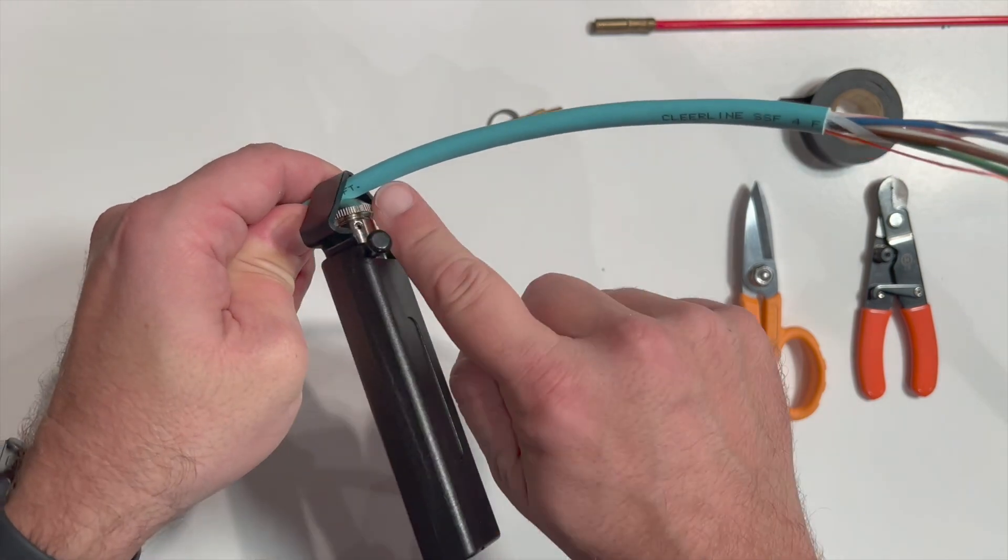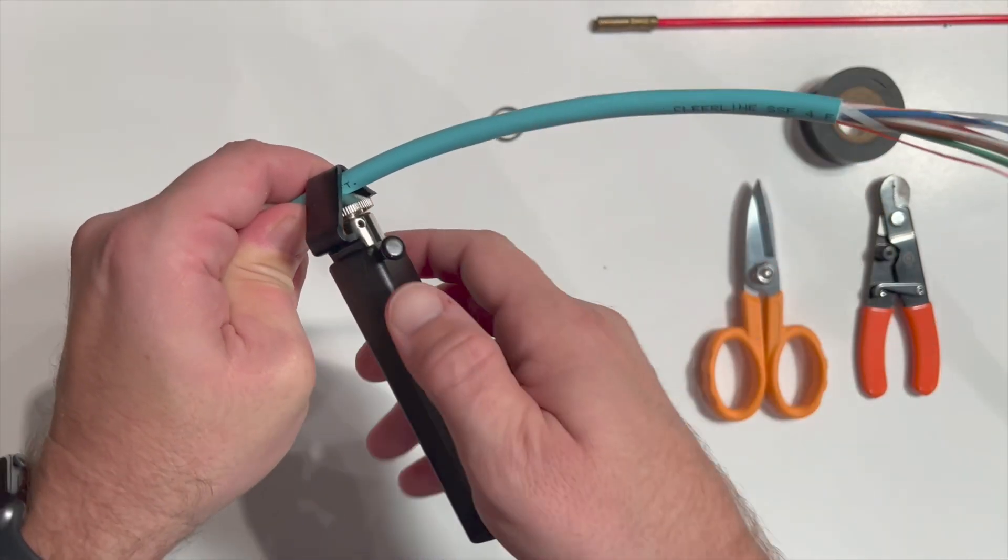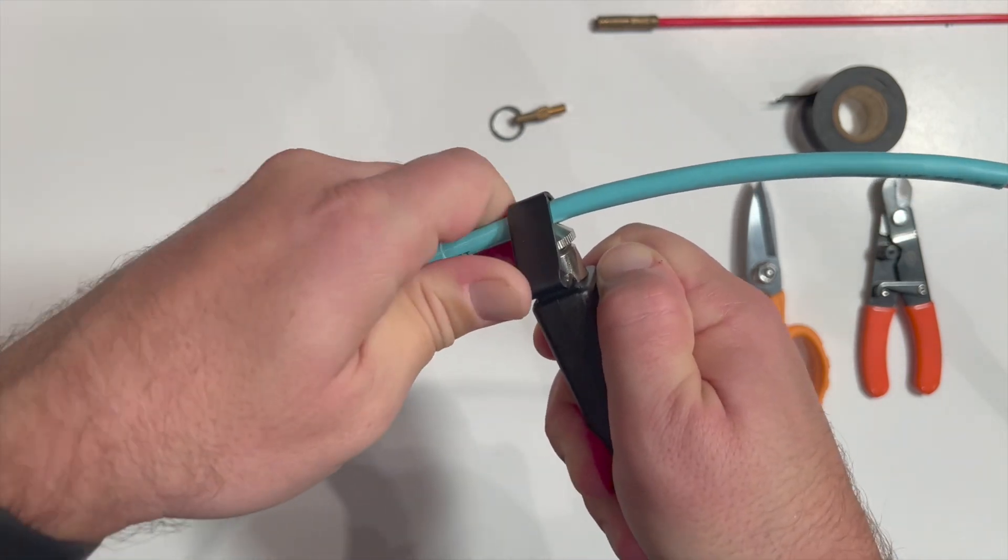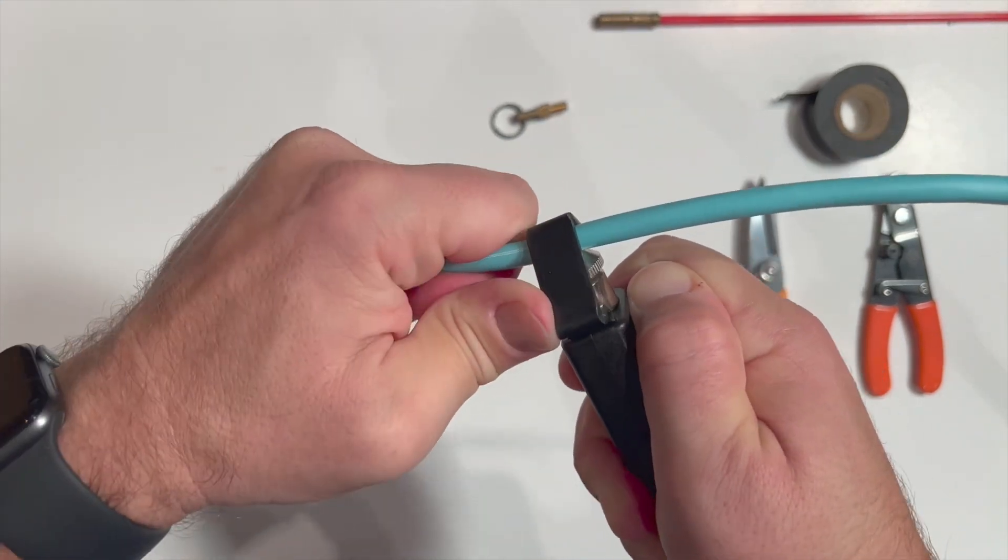Try to align the slit in the jacket with the location of the ripcord within. The ripcord can now be pulled down the length of the jacket to the radial cut, ready to be removed.